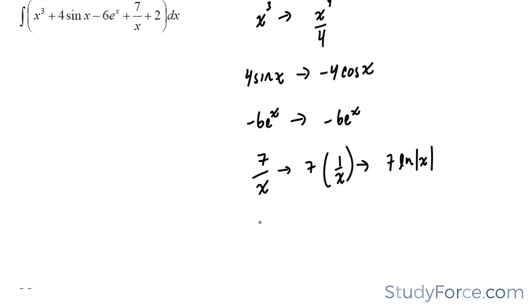And lastly, 2 becomes simply 2x. What we're going to do is combine all five of these terms, and then add an arbitrary constant c at the end. So f of x is equal to, and notice how this f is big, which denotes the integral,